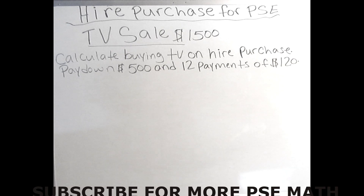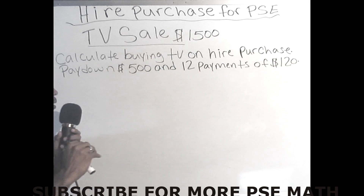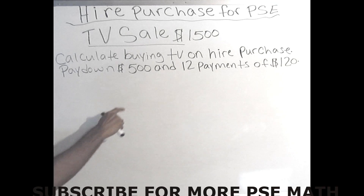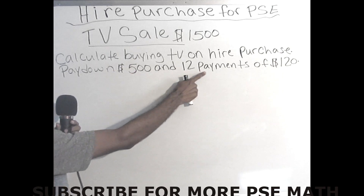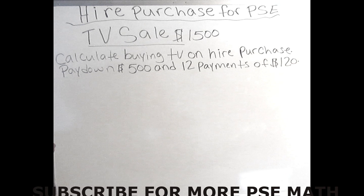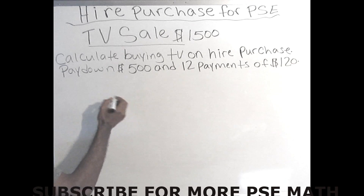Let's go right into the problem. It says: calculate buying the TV on hire purchase — you're going to pay $500 down and make 12 payments of $120. The company gives you a year to pay for this product, but you must pay the $500 deposit before you take the TV home. One important mistake to avoid: your $1500 minus the discount has nothing to do with your hire purchase price. The hire purchase price is based solely on the deposit and the monthly payments.